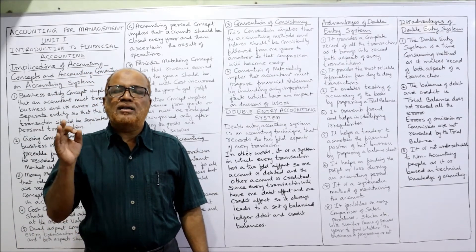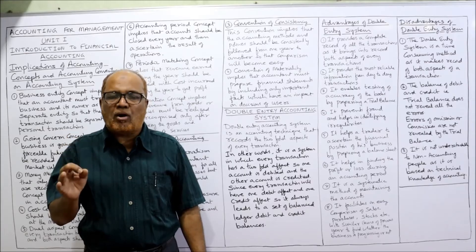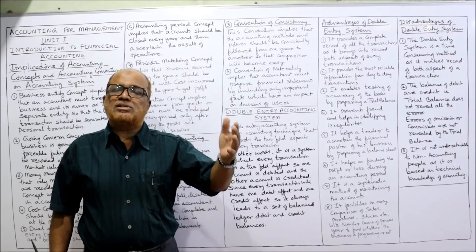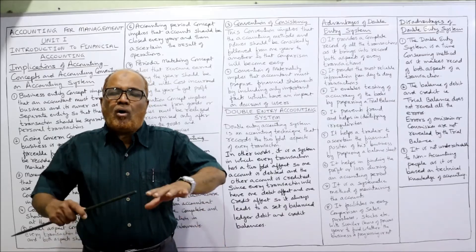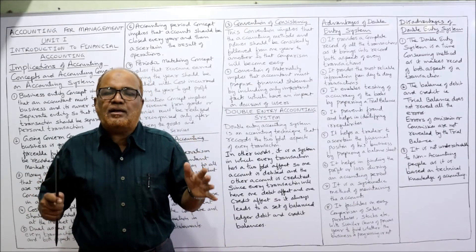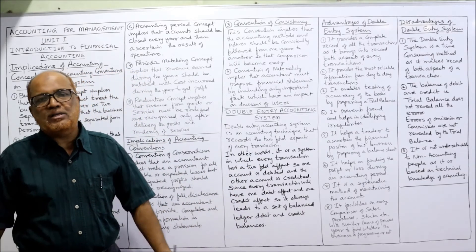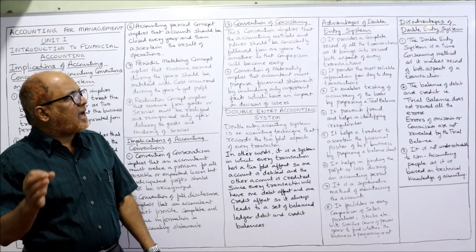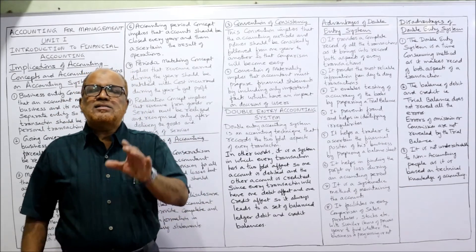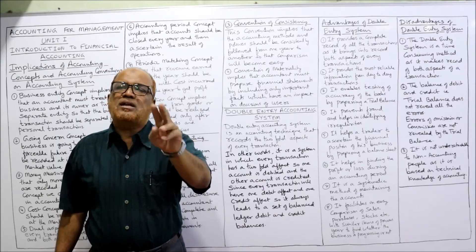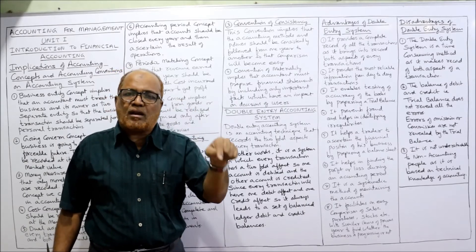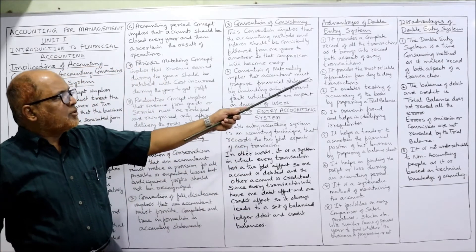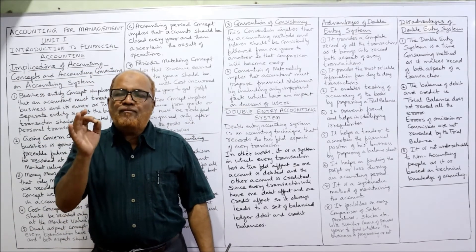By following this method, we can check mathematical accuracy, prepare the income statement or profit and loss account, and prepare the statement of financial position or balance sheet. The first advantage is it provides a complete record of all transactions, as it brings into record both aspects. This is a complete accounting system because every transaction has two aspects and both are recorded.